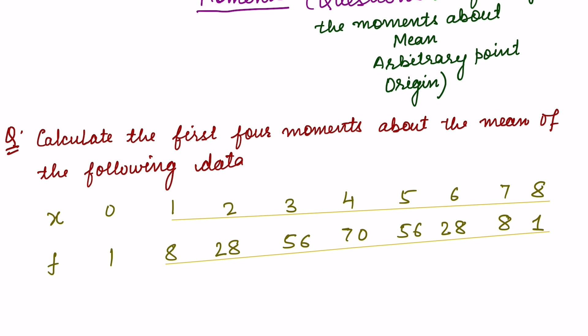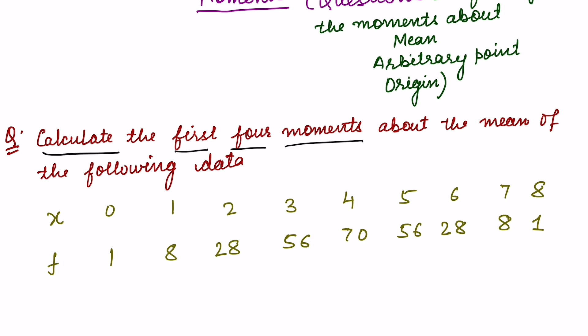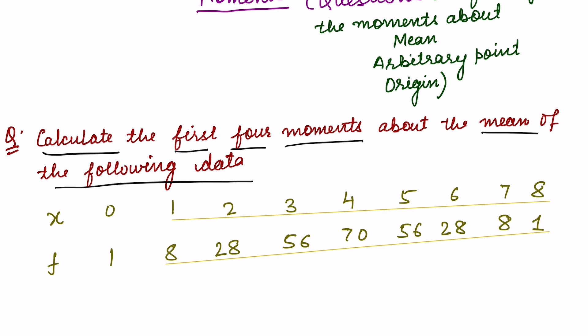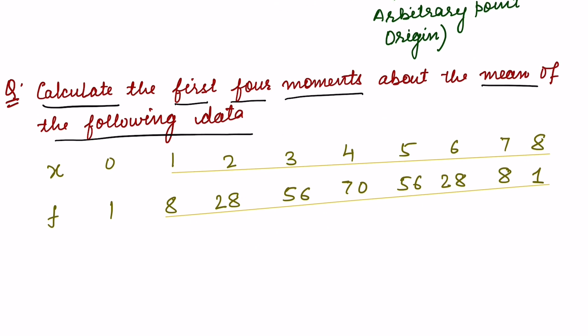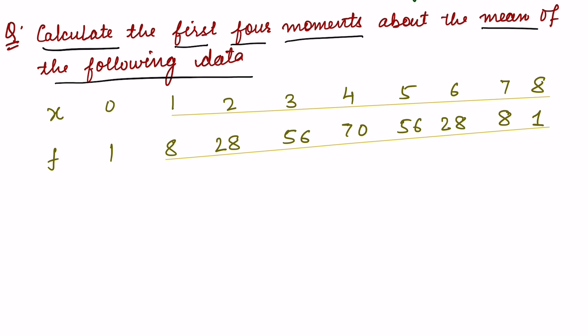For the first question, we have to calculate the first four moments about the mean for the following data. The data is given, so let us move on and make the table, because we have to make the table in order to find it.